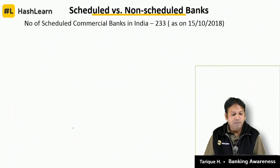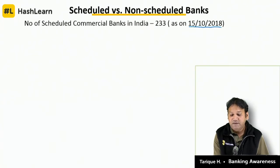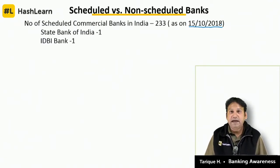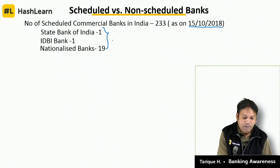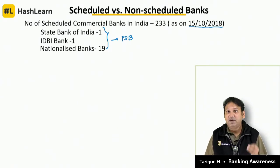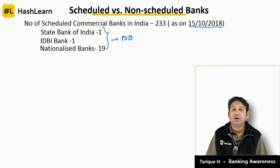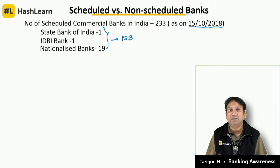The number of scheduled commercial banks in India stands at 233 as on 15th October 2018. The breakdown: State Bank of India is 1, IDBI is 1, nationalized banks are 19, making 21 public sector banks. One more public sector bank is the payments bank called IPPB — so total public sector banks is 22.